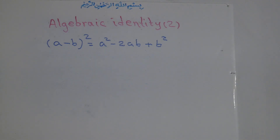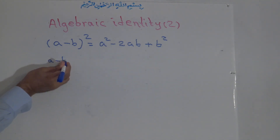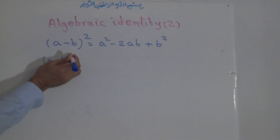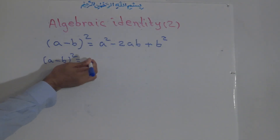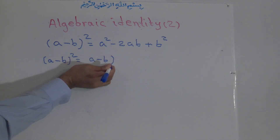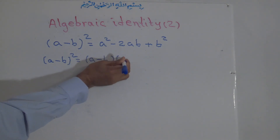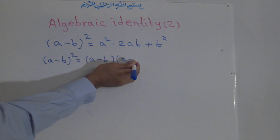How can we find this, or where can we derive this? Now I show you: a minus b to the power of two means it is equal to a minus b times a minus b.